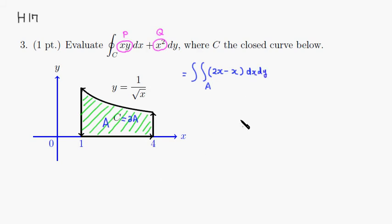Then you have dx dy. You can simplify that, so it's going to be a double integral - 2x minus x would be x.